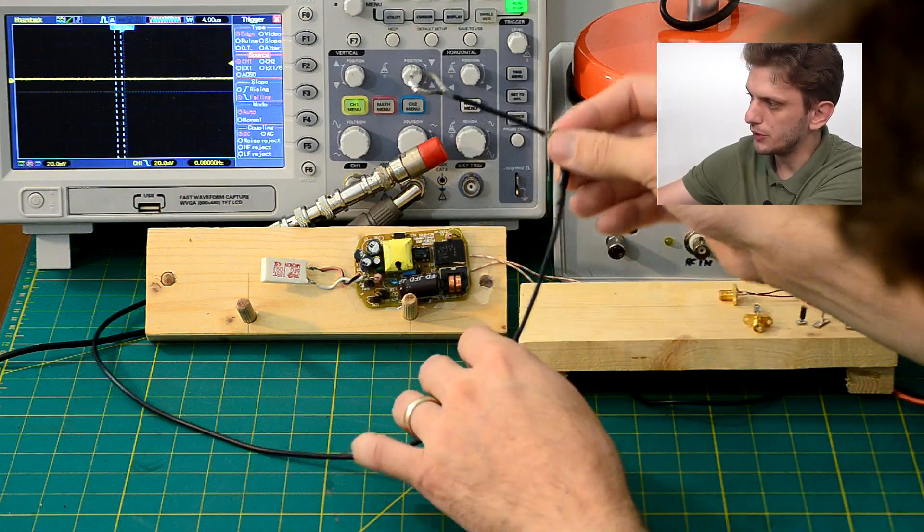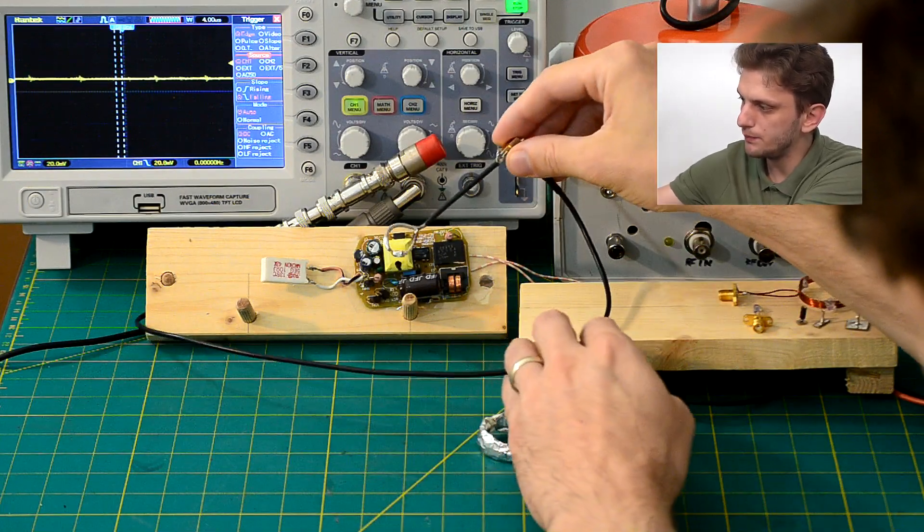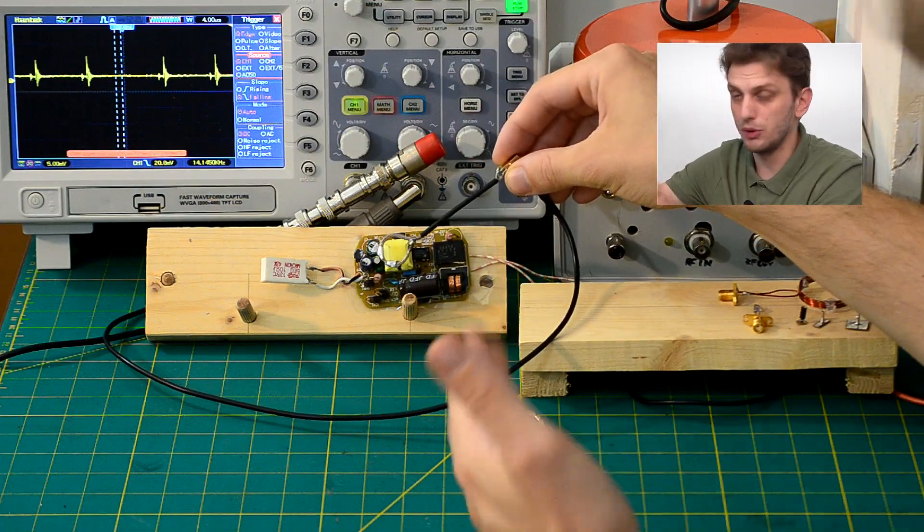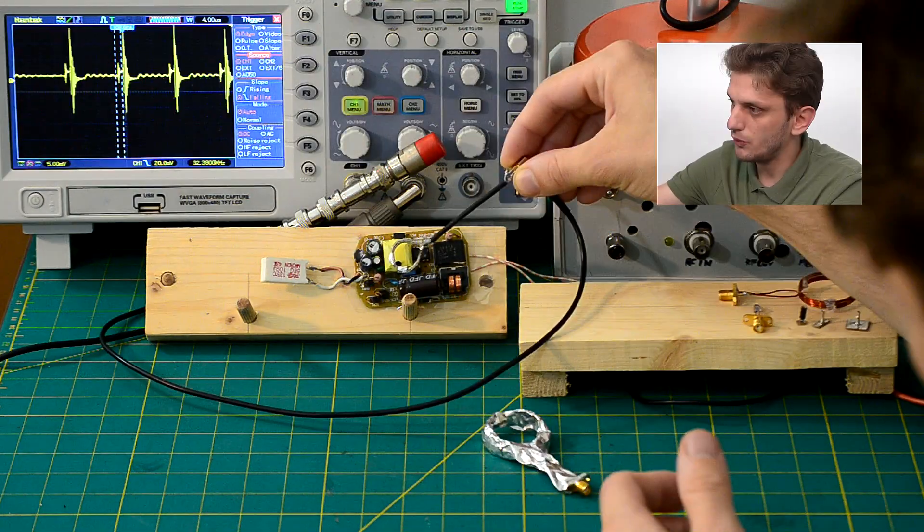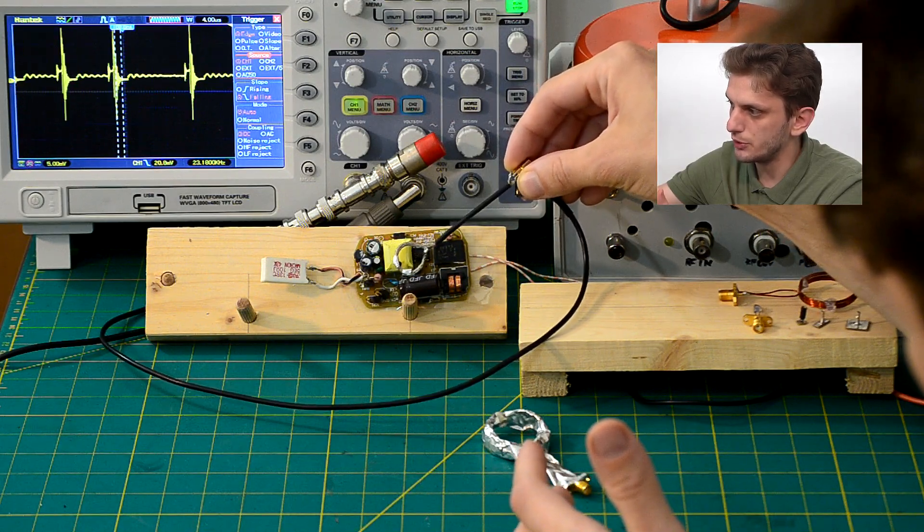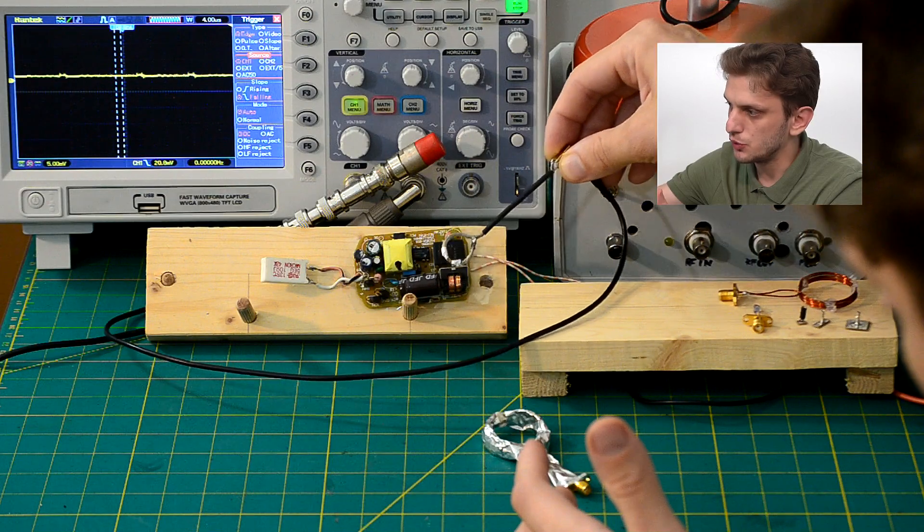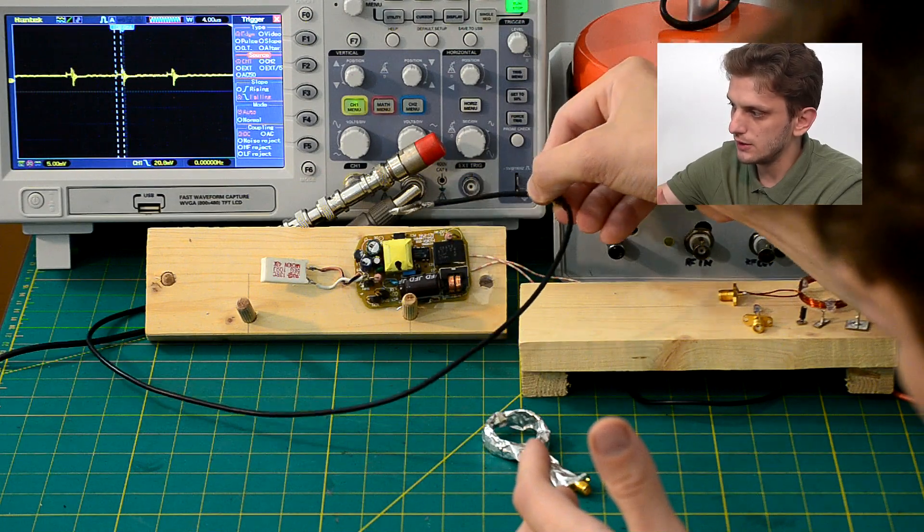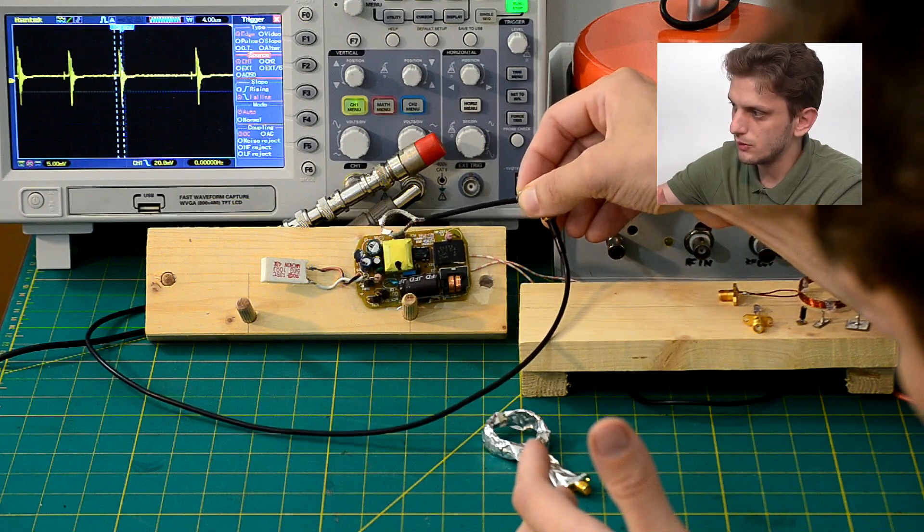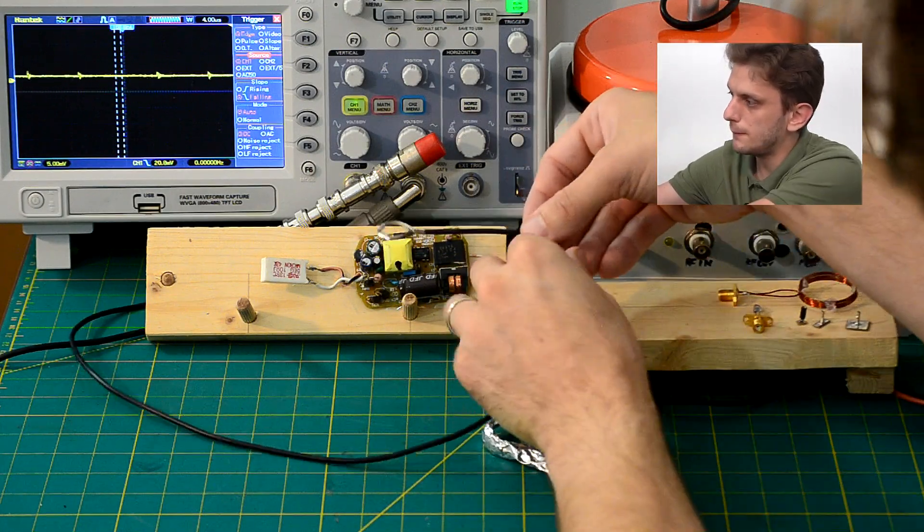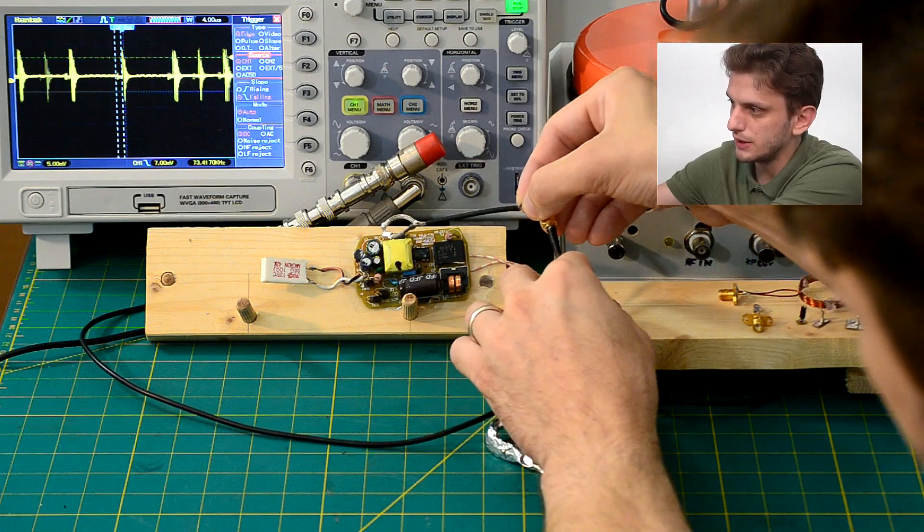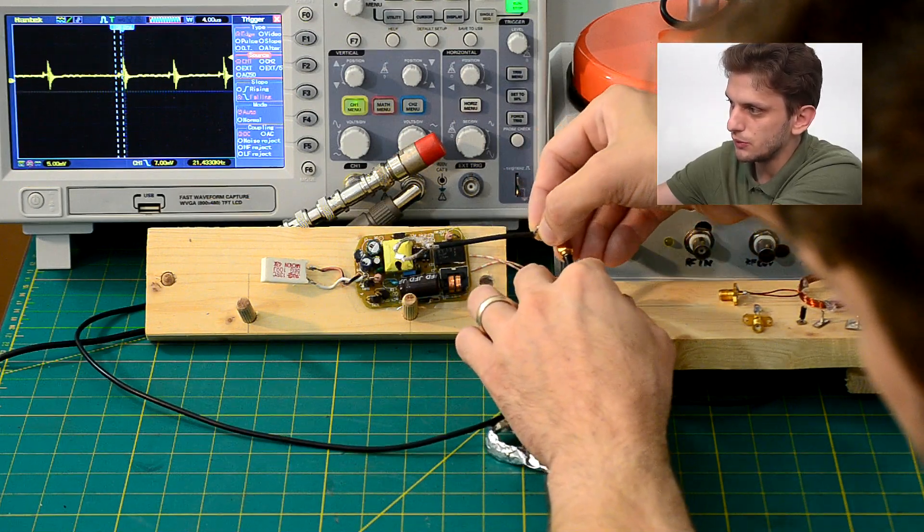Now if we turn to the single turn probe, basically we get a much smaller response this time because there's only one turn rather than five. We get most of the same signals, so we have a very strong signal around the transformer. And as we move further away, there's less and less signal.